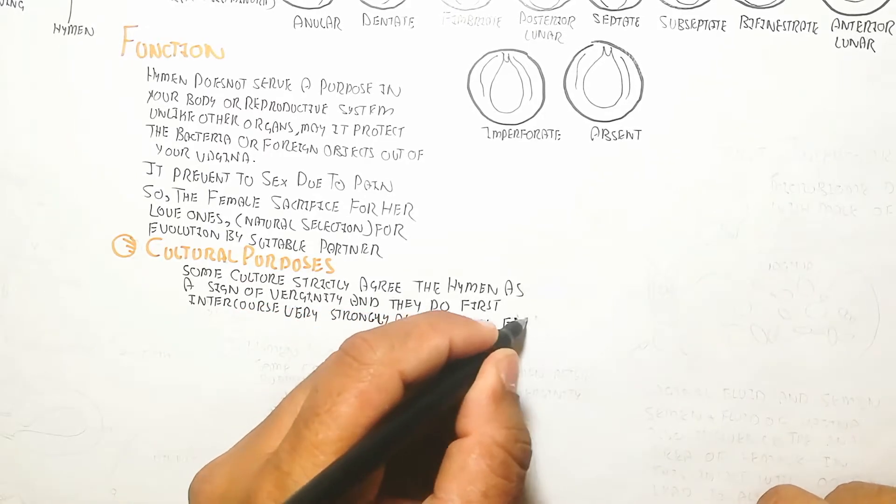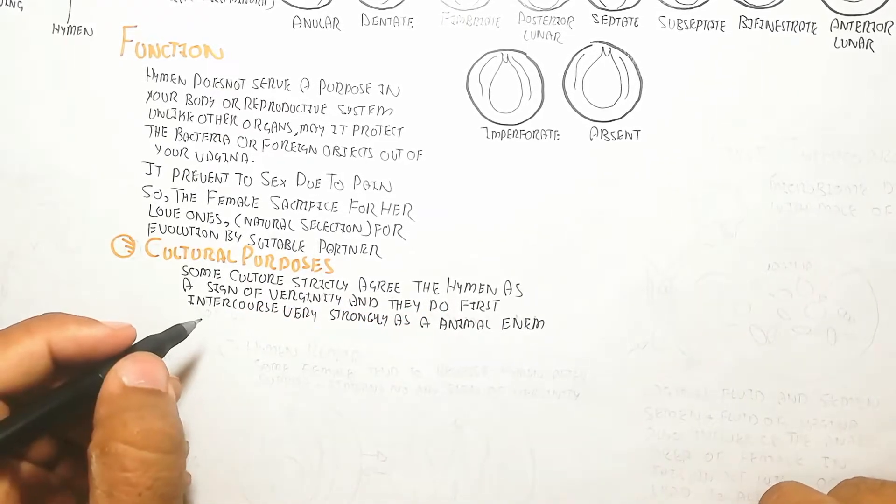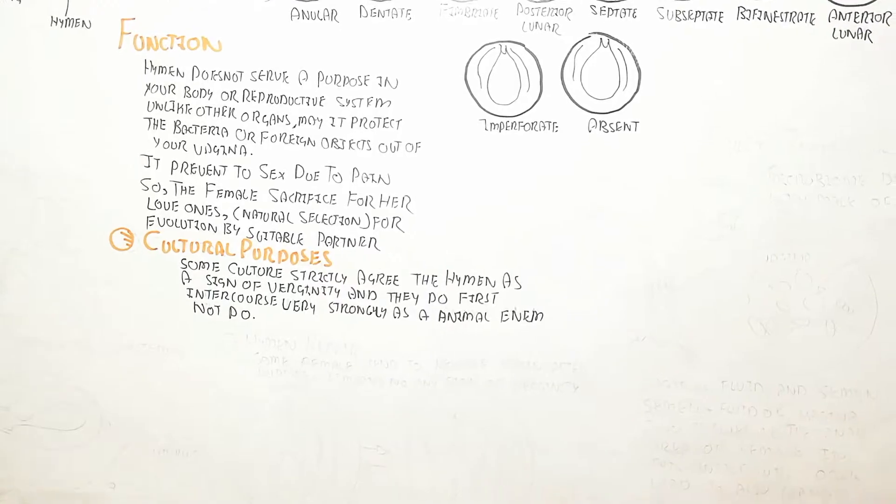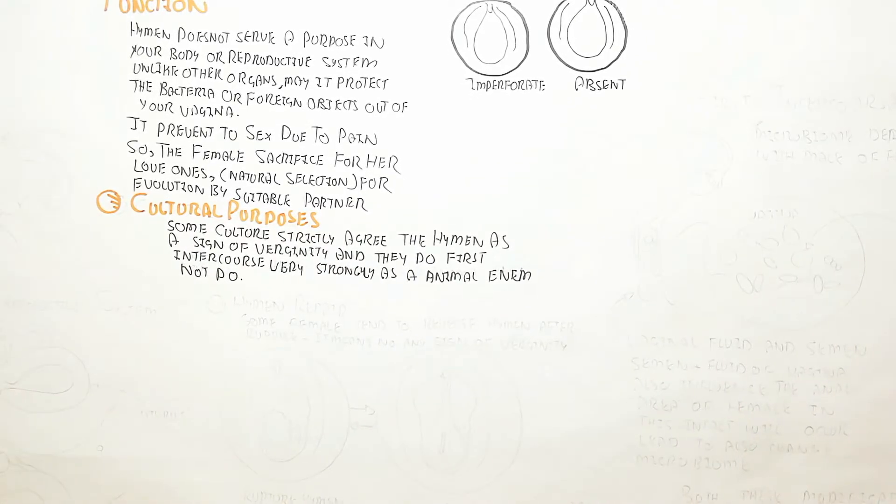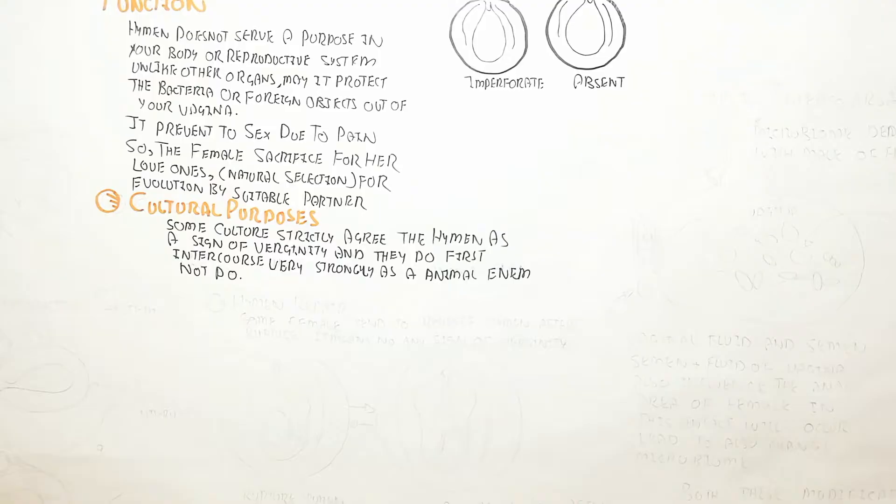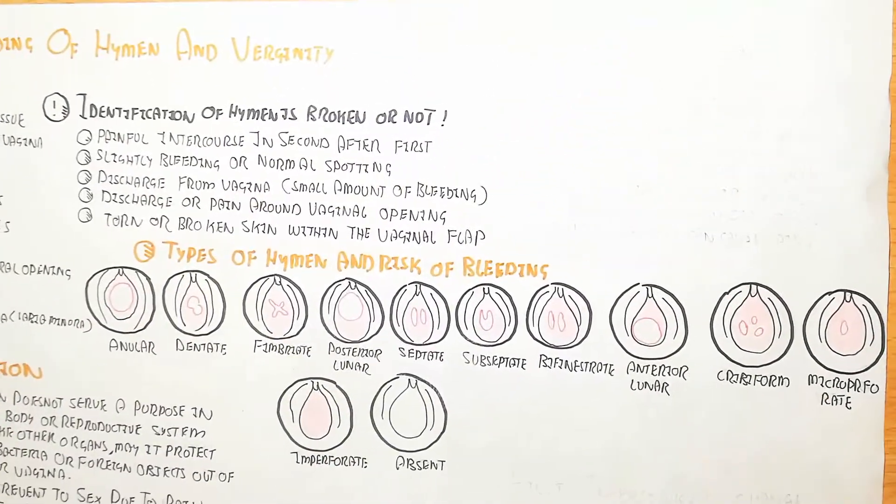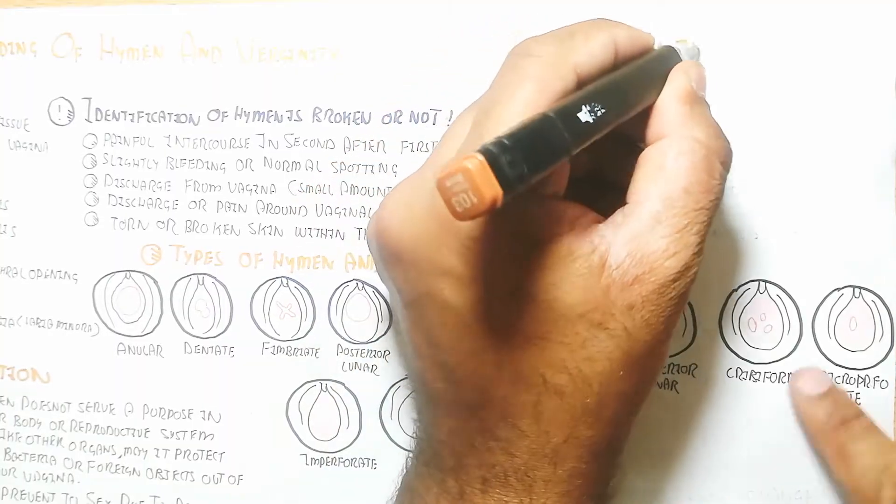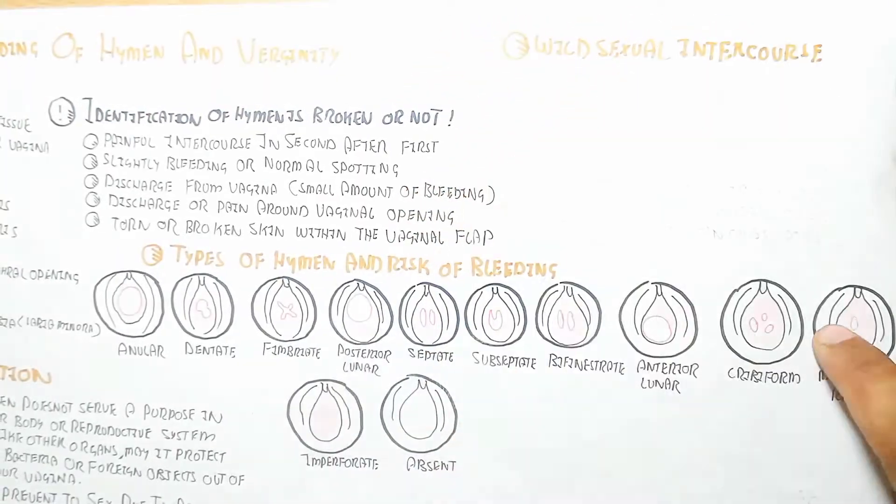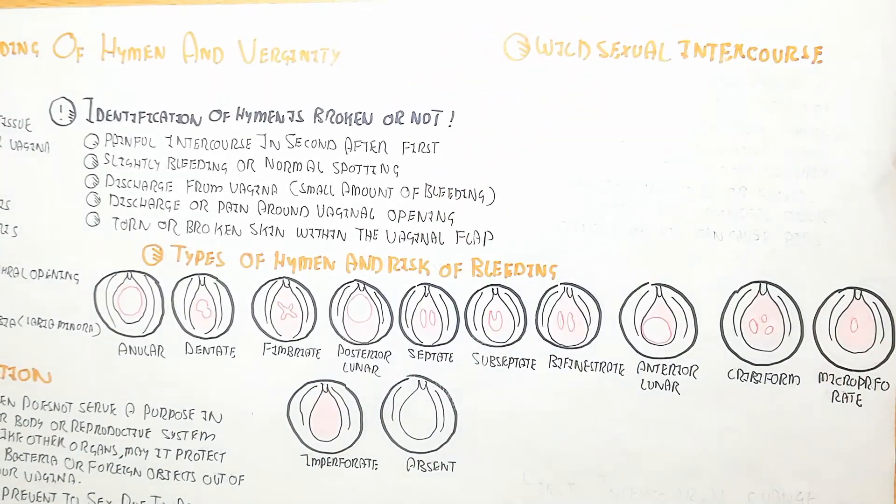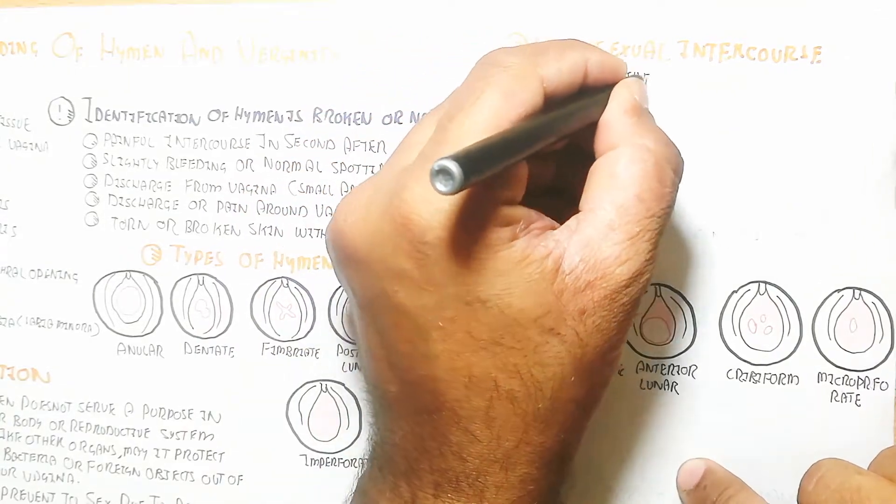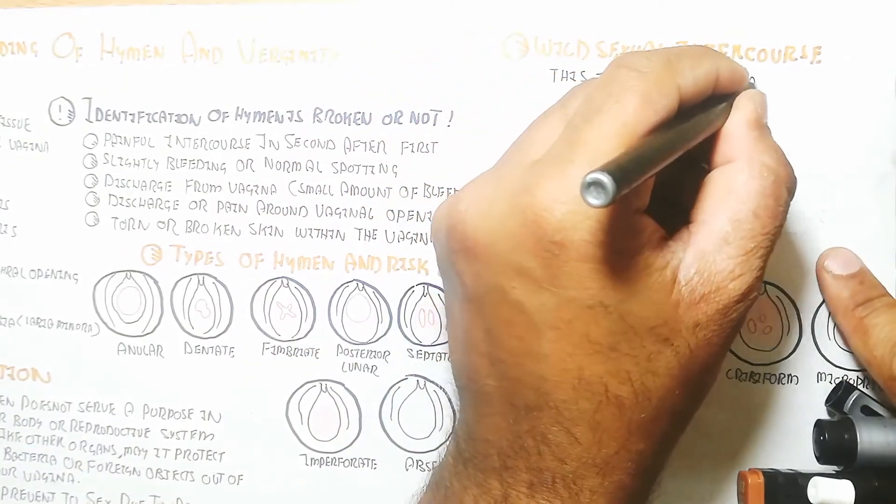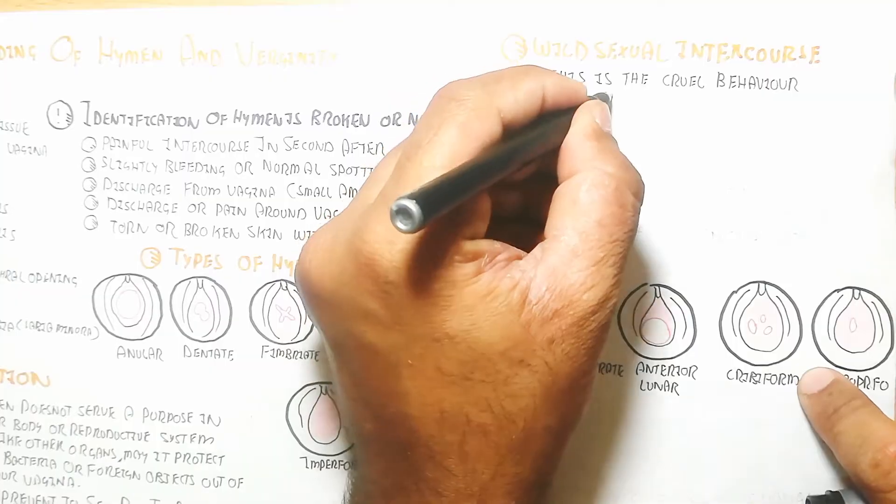The cultural purpose: some cultures strictly regard the hymen as a sign of virginity, and they conduct first intercourse very strongly, like an animal, for the creation of bleeding to understand and realize that this is the female's first time of intercourse after marriage.